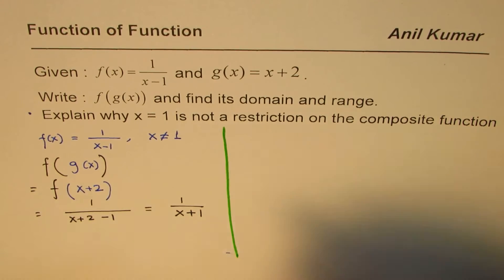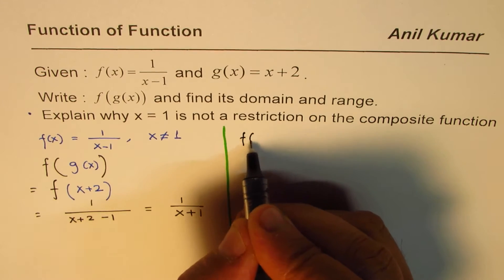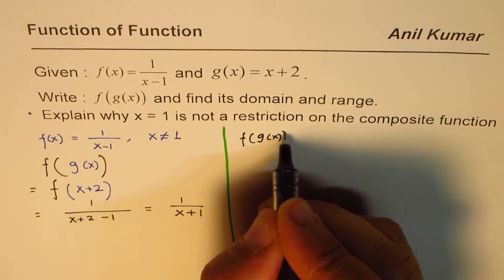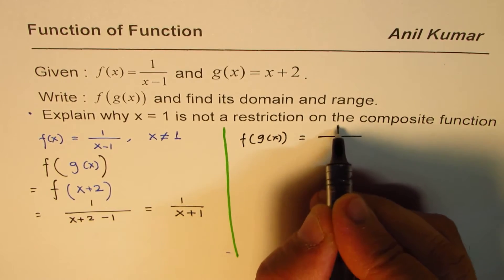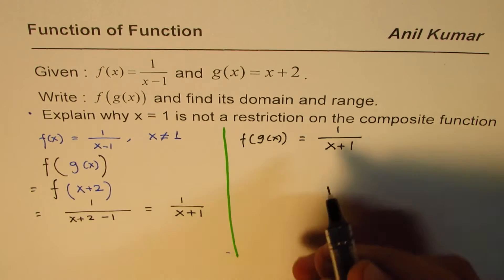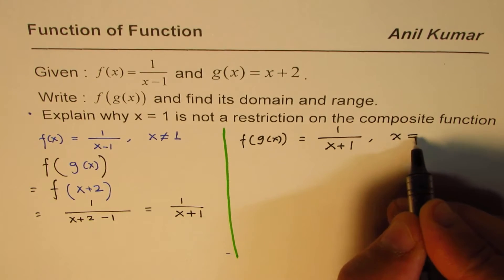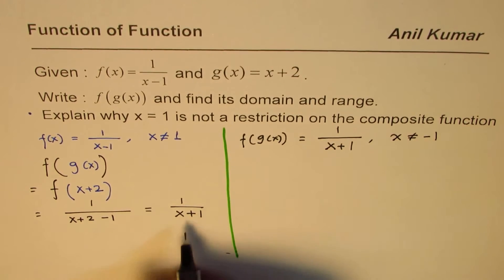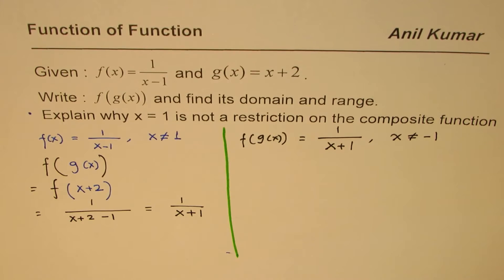So what is the function of function which we get? f(g(x)) equals 1/(x+1). Clearly here the restriction is that x is not equal to -1. We didn't get x not equal to 1. Do you see that part?